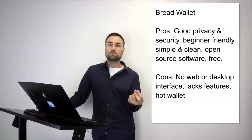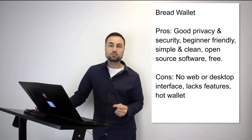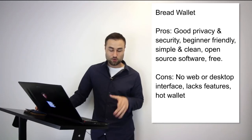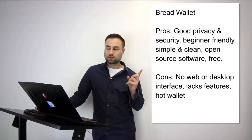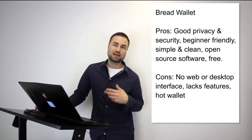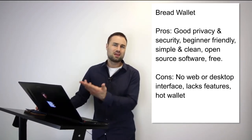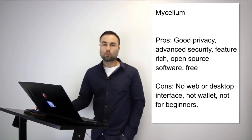Now for the actual recommendations. First is the Bread Wallet — a simple wallet literally made for a child, the user interface is that simple. It's specifically just for Bitcoin, no other currencies. Pros: very good privacy, beginner-friendly, open source, free, simple, and clean. Cons: no web or desktop interface, lacks features, and it's a hot wallet with less security. If you want something for day-to-day transactions, maybe keeping around $500 in Bitcoin, Bread Wallet is a great start for beginners.